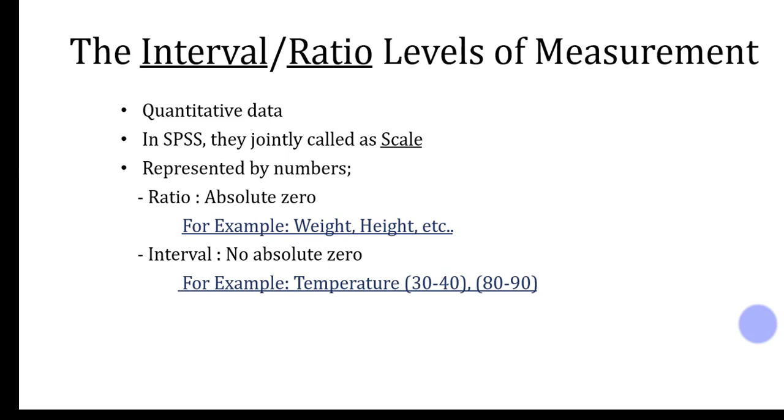But in interval, if I can say the temperature is zero, what does it mean? Zero on the Celsius scale, the temperature zero on the Celsius scale means that it is a freezing point. So it has some meaning. It does not mean that there is an absence of temperature. So therefore, we say that ratio has absolute zero and interval has no absolute zero.